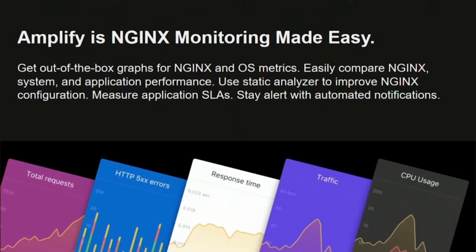You may remember we talked previously about a project — NGINX Amplify. Amplify is NGINX monitoring made easy. It's out-of-the-box graphs and charts for NGINX and operating system metrics. It allows you to explore and compare NGINX performance and application performance. It has a rich static analyzer that builds on the insights and expertise of the core NGINX team and gives that to you in an easy-to-understand way. It allows you to measure SLAs, monitor how your application is performing, and be alerted with automated notifications.